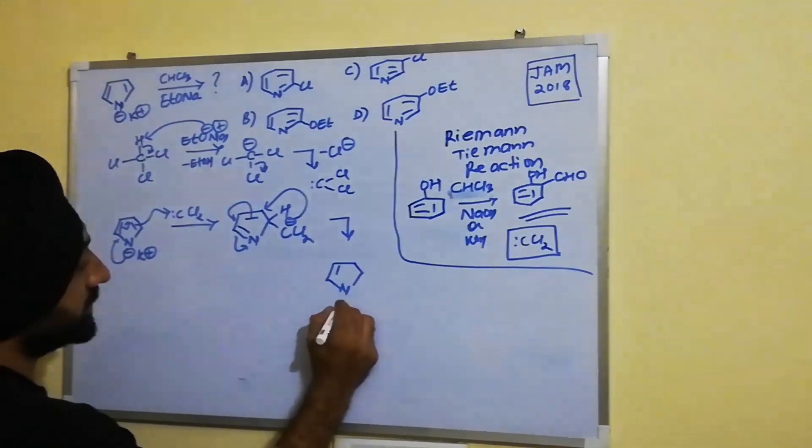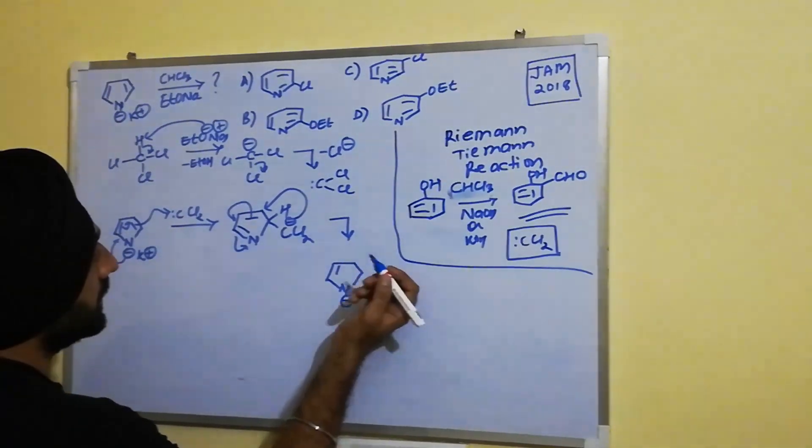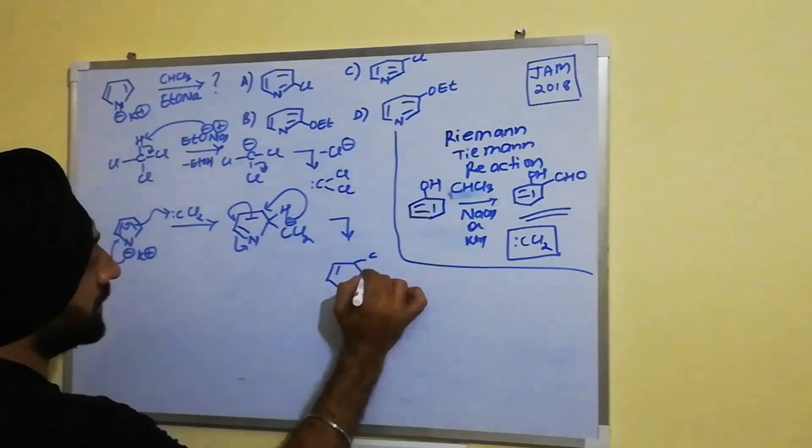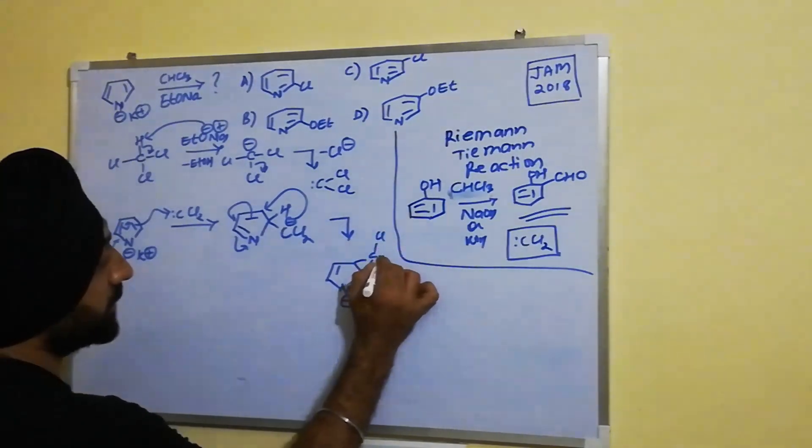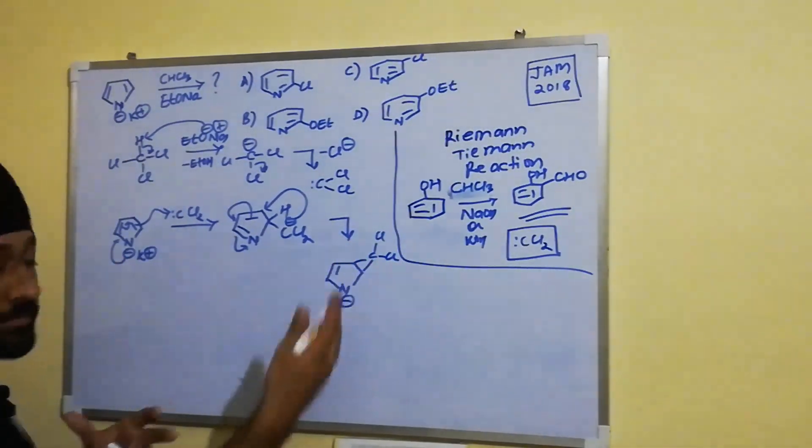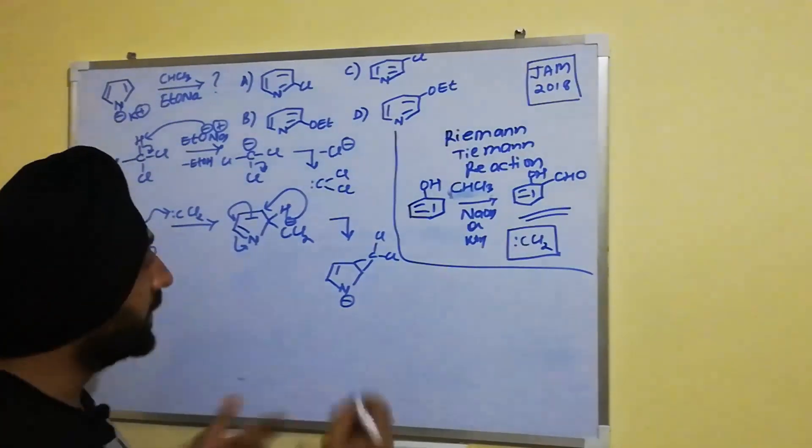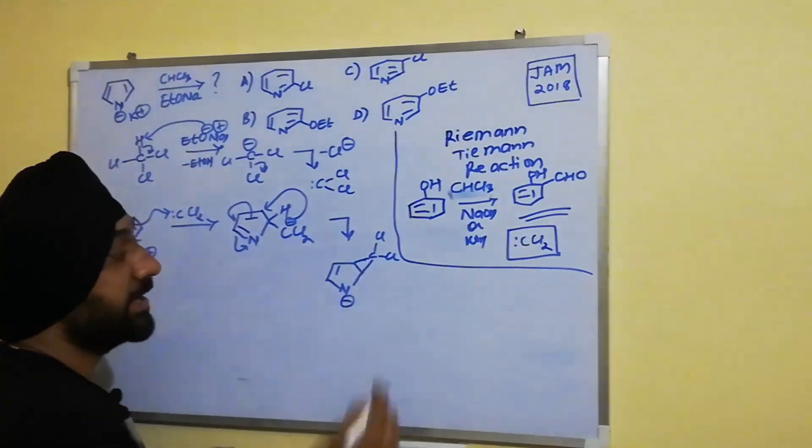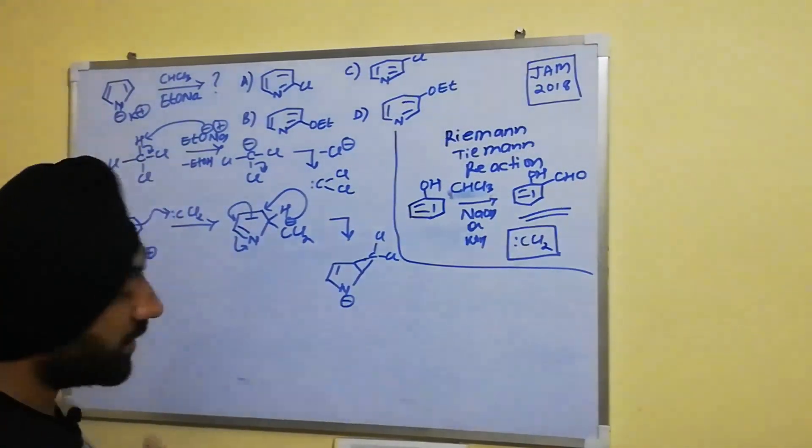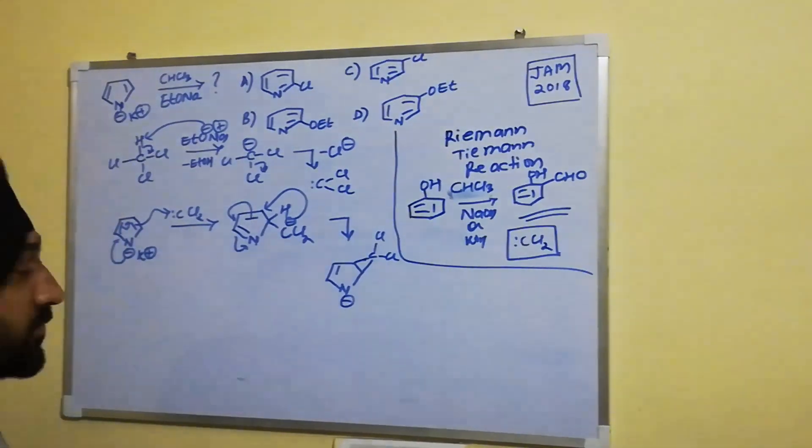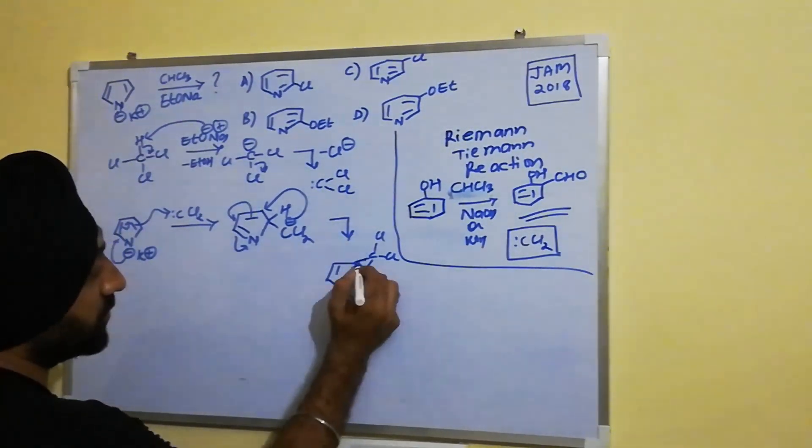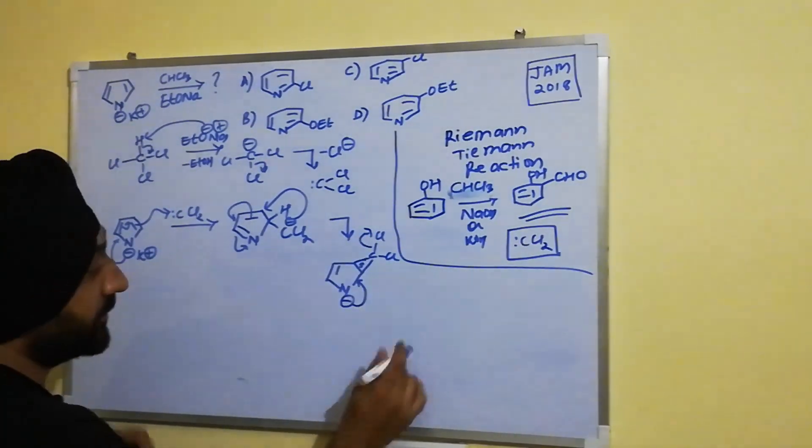So what we have here is this particular three-membered intermediate which has formed. Now this negative charge comes over here. This bond moves here and this chloro leaves.